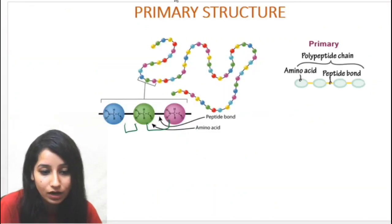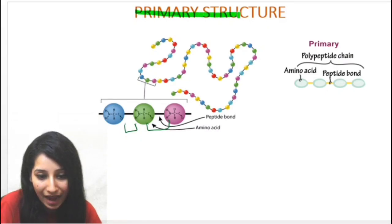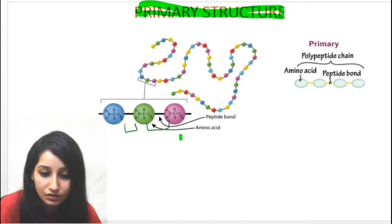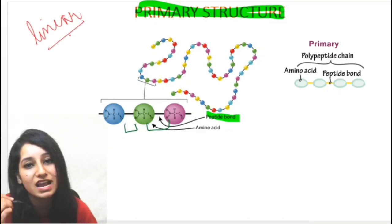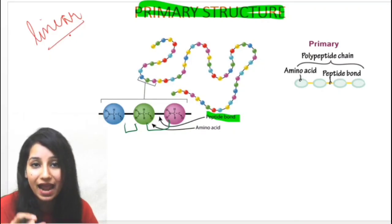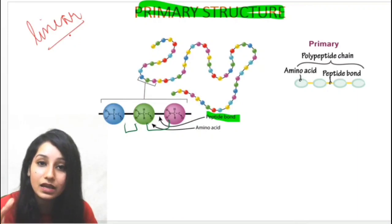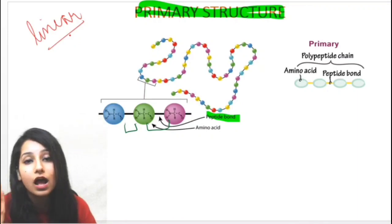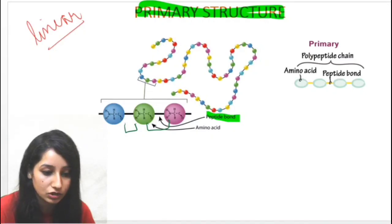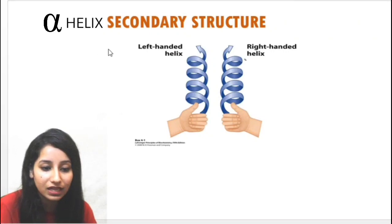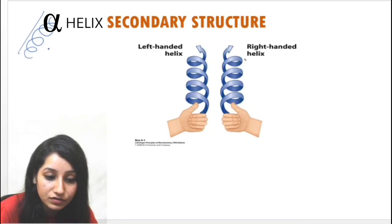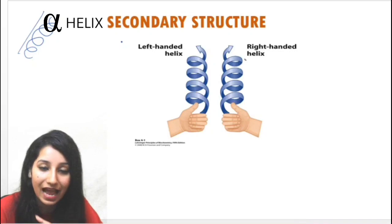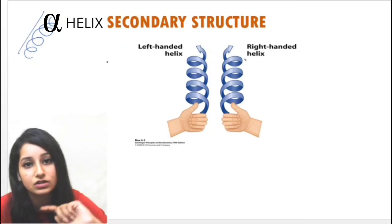Let's recall the primary structure. When amino acids are joined together by peptide bonds, they form a linear structure — that is the primary structure. Now there will be a modification in this primary structure that results in the formation of the secondary structure. The primary structure will start coiling, and this kind of coiling structure is known as the secondary structure.